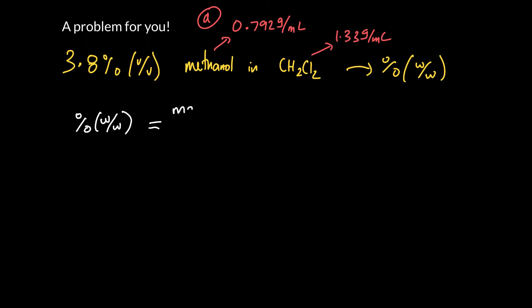So percent by mass means that you want to find the mass of the solute, so the mass of methanol, and that's divided by the mass of the whole solution. Remember, it's not just the solvent, it's the whole shebang. And it probably doesn't really matter what units for mass you use, as long as you use the same ones on the top as the bottom.